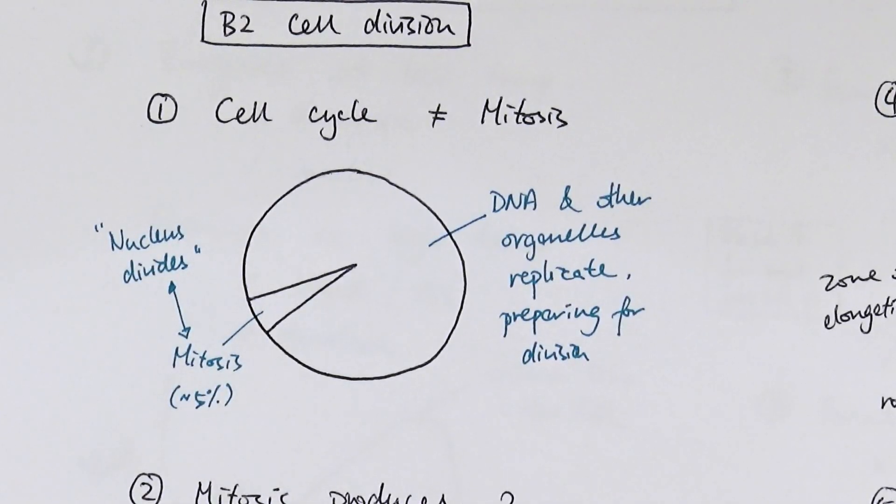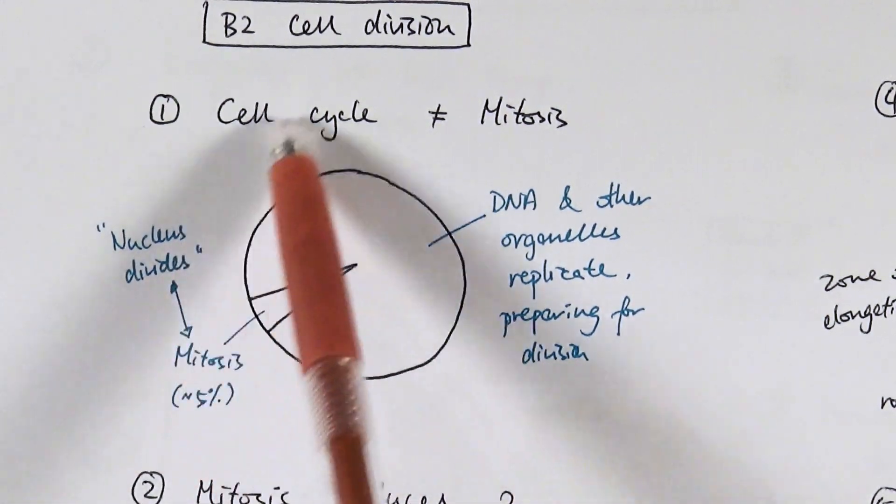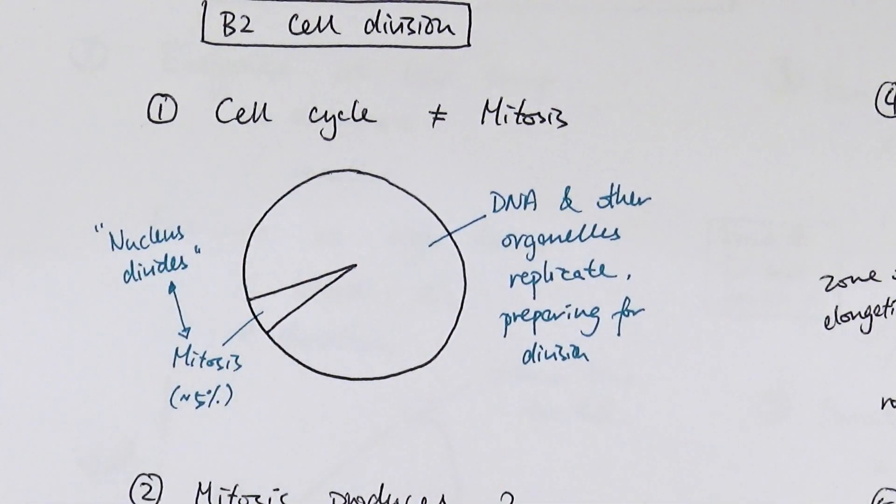The first thing is knowing what cell cycle and what mitosis is. The book briefly mentions about cell cycle but not in enough detail for you to realize that actually it is really important. The cell cycle is this entire thing, it's basically the whole cycle, a life cycle of a single cell. So every cell will undergo cell cycle multiple times until a certain point only.